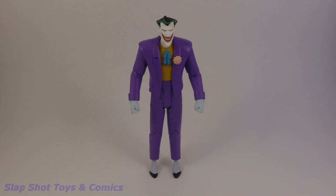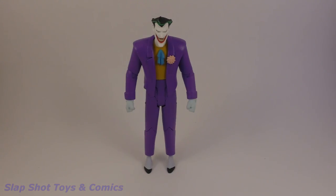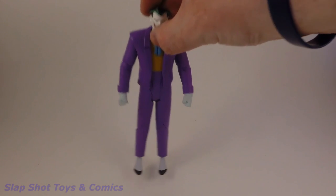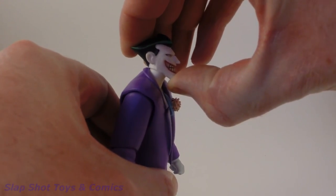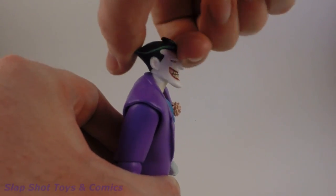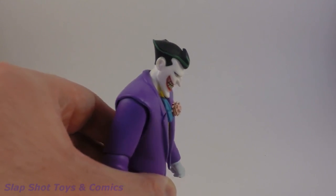Taking a look at the articulation on this figure, it's actually pretty good. The Joker can look up about that much, so not a whole lot there. But he can look down quite a bit. So a good range of motion there.